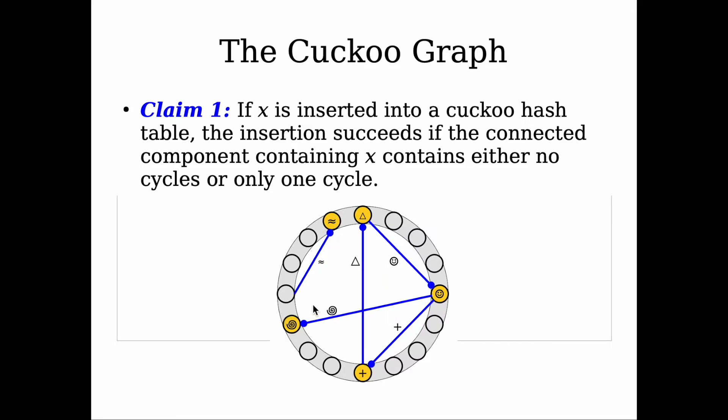Because basically we have this one with no cycle for this connected component. If we add one edge connecting the two—for example, this Naruto symbol and the triangle—this will create an unsuccessful insertion because currently the connected component where we added that new edge already has an existing one cycle.